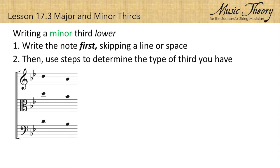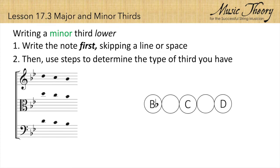Next, we use steps to determine the type of third we have. D down to C is a major second. C down to B flat is also a major second. We know that two major seconds makes a major third.